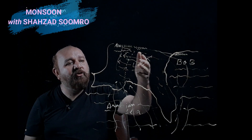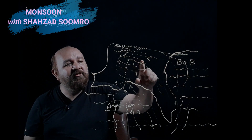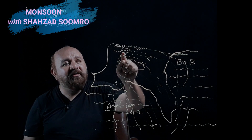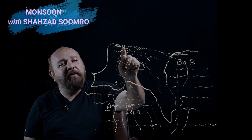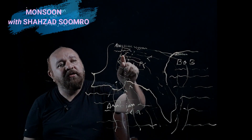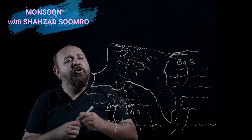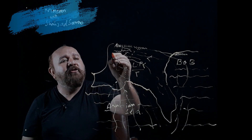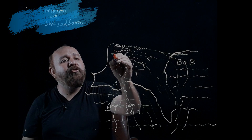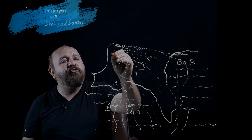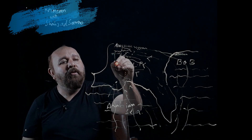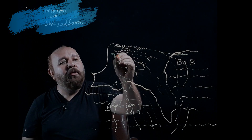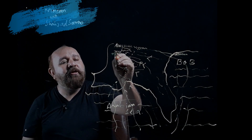The primary monsoon from the Bay of Bengal enters the entire subcontinent through the Indian region and then into Pakistan. Traveling from the Himalayas, it brings rainfall to some areas including Peshawar and the Potwar Plateau as well. This is the Potwar Plateau, and this is where the rain reaches.